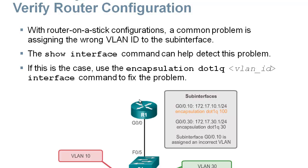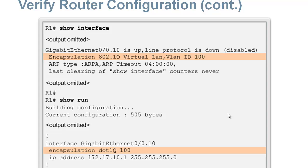With router on a stick, one typical issue is putting the wrong number after the encapsulation command. After encapsulation dot1Q, that number has to be the VLAN ID. If you put 100 instead of 10, you'll have a problem because it'll be looking for the tag that says 100, not 10. You can go back into the subinterface and just type encapsulation dot1Q 10 to overwrite the incorrect value. Use show run and look at your encapsulations — the interface will show the encapsulation value so it's easy to spot.